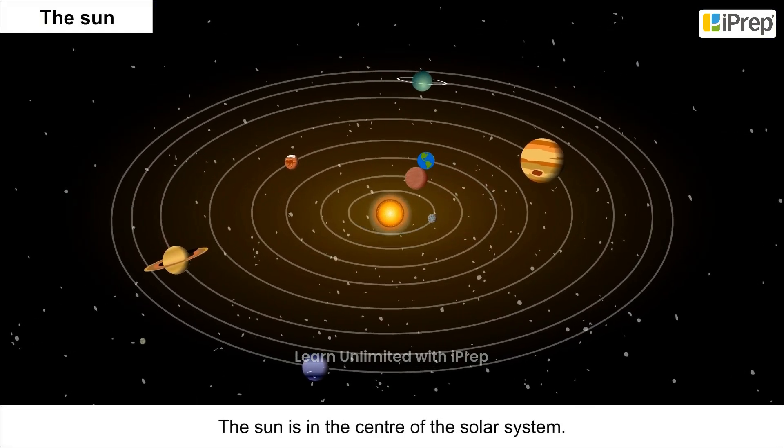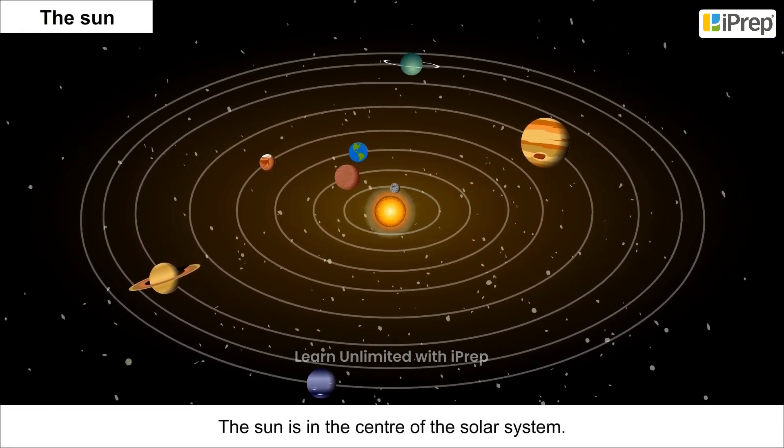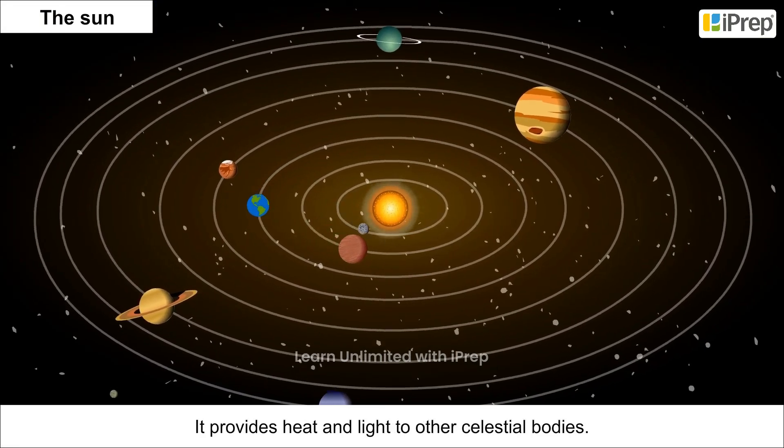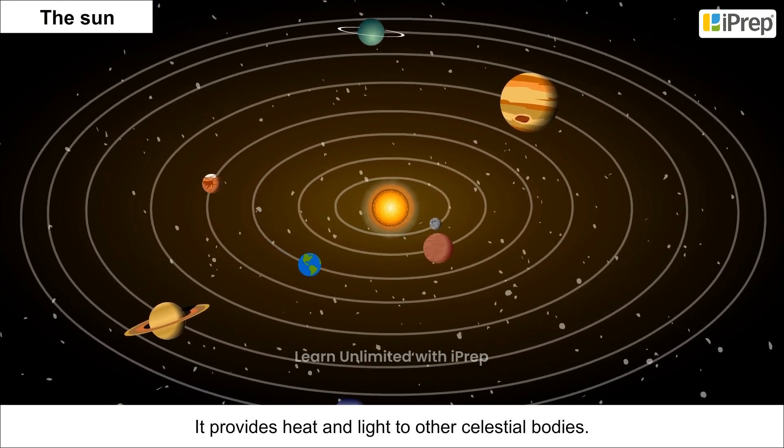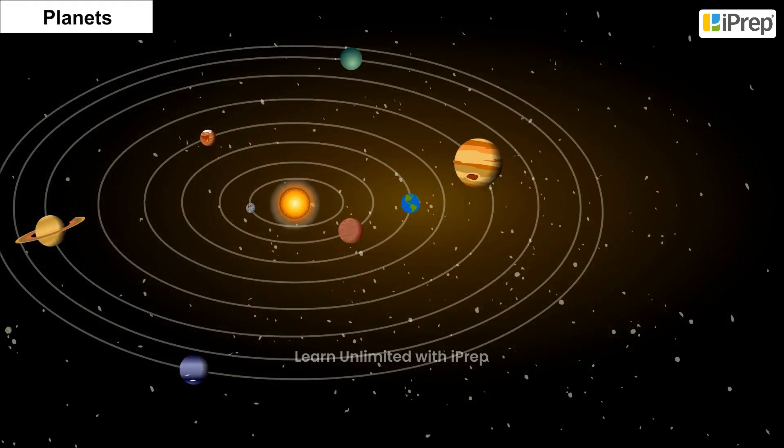The Sun is in the centre of the solar system. It provides heat and light to other celestial bodies.